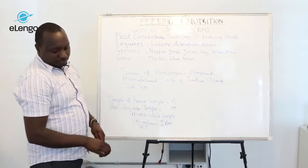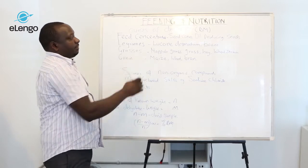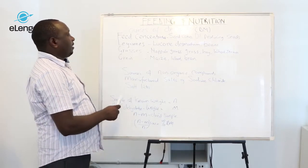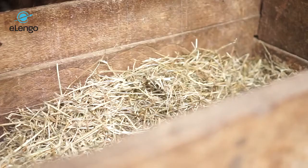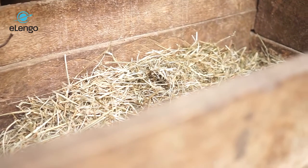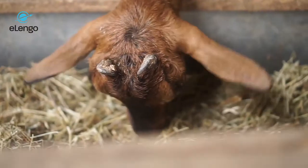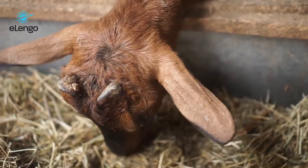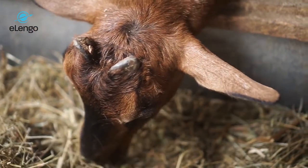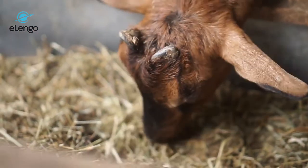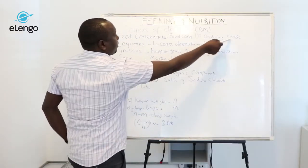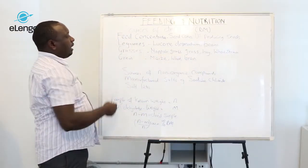Sources of dry matter include feed concentrations such as seed cakes and oil-producing seeds. For example, sunflower seeds can be a good source of dry matter.